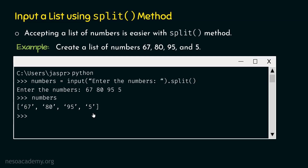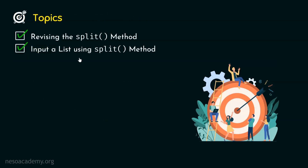There is one problem if you observe carefully. We are getting the list, but it is a list of strings, not a list of numbers. The requirement is to convert these strings into integers, which we will learn in the next lecture. This lecture was all about inputting a list using the split method. In the next lecture, we will understand how to get a list where each item is an integer. Thank you for watching this presentation — see you in the next one.